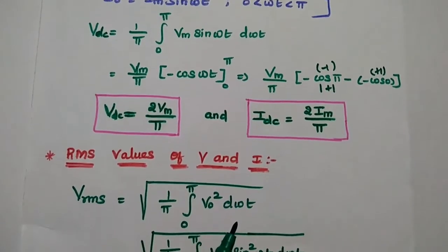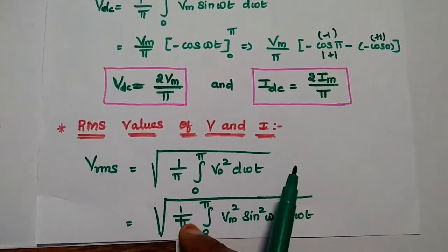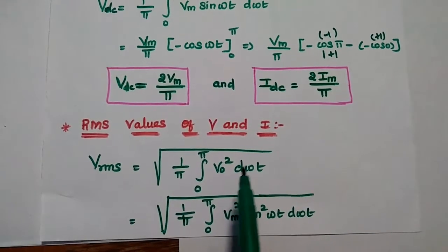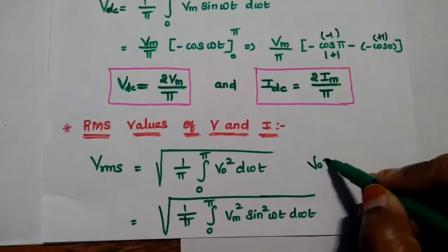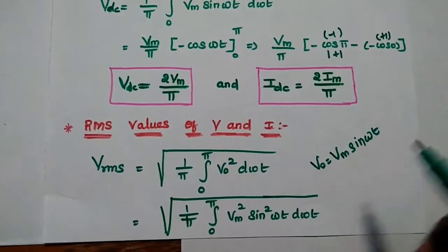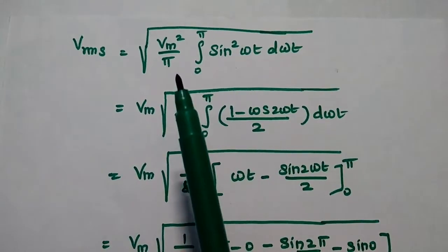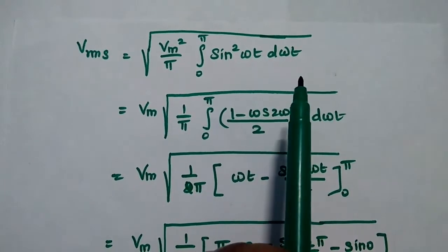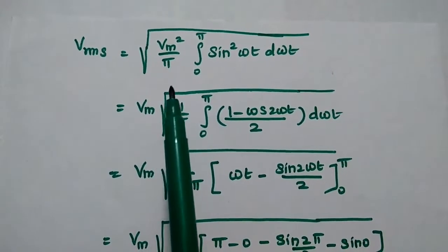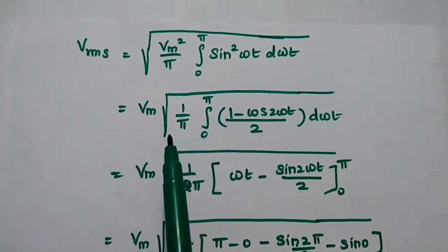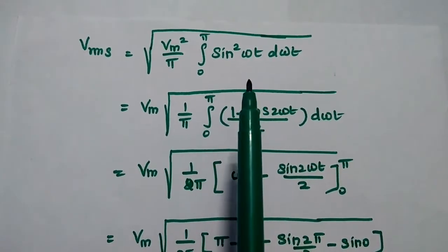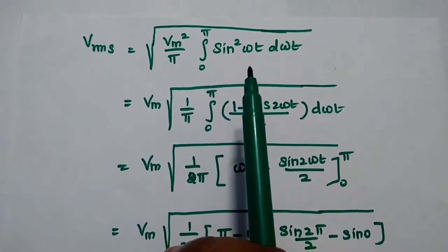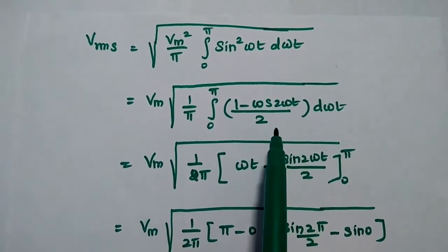Next are the RMS values of voltage and current. RMS means root mean square value. We take the root mean of the square of the output signal: square root of (1/π) × integral of V0² dωt. Since V0 = Vm sin(ωt), we substitute to get square root of (Vm²/π) × integral of sin²(ωt) dωt. Taking Vm² outside the square root, we use the identity sin²(θ) = (1 − cos 2θ)/2, replacing sin²(ωt) with (1 − cos 2ωt)/2.